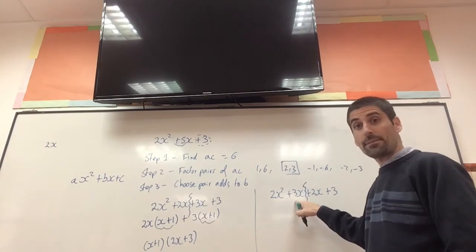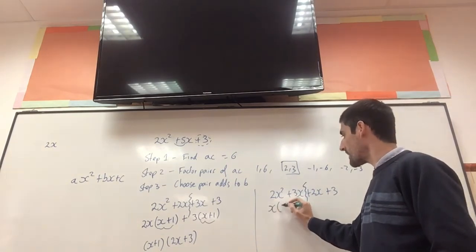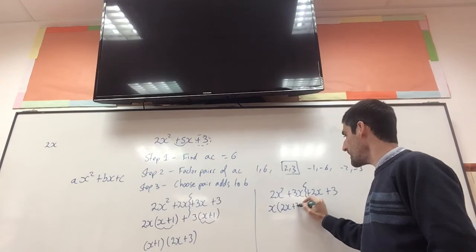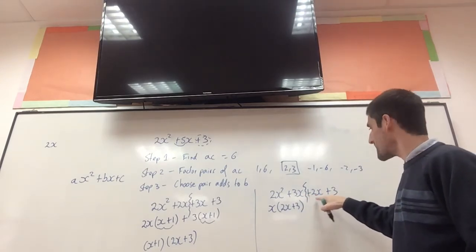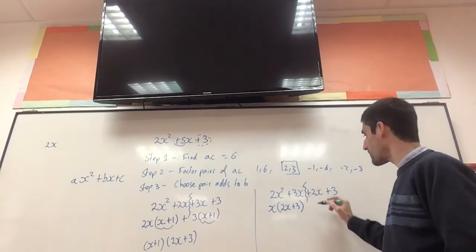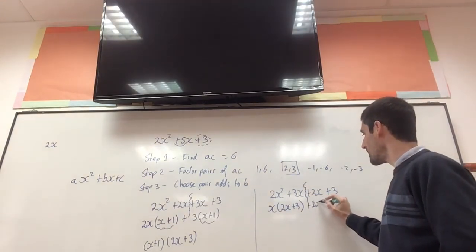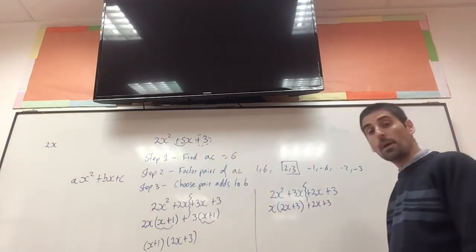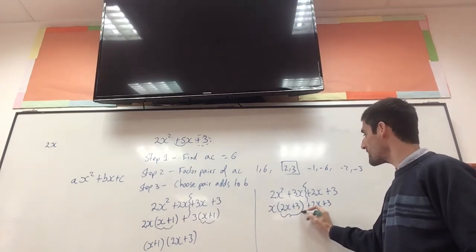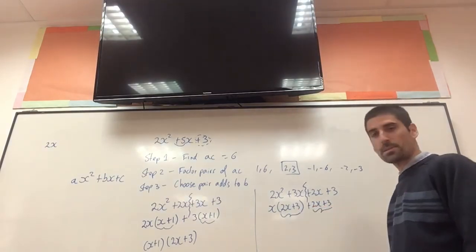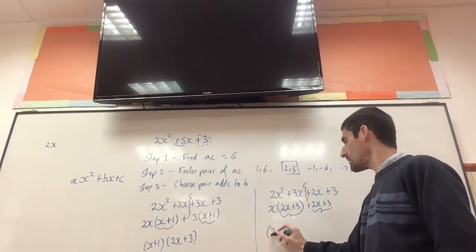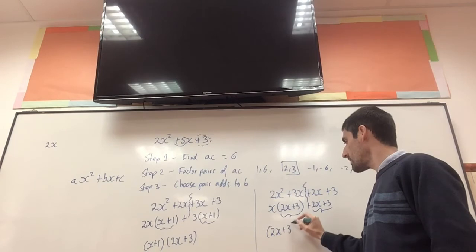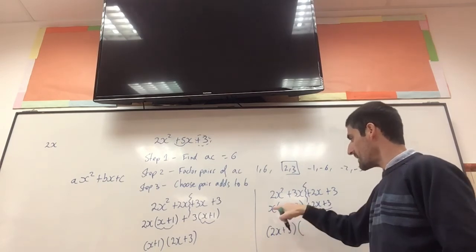Here, the only thing I can factorise is the x. So I've got x brackets 2x plus 3. And here, I cannot factorise anything, because 2x and 3 do not factorise. So plus 2x plus 3. But notice that I've got 2x plus 3, 2x plus 3.